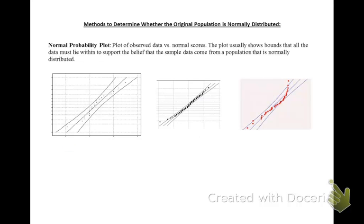The best method you could use to determine whether the original population is normally distributed is to form what's called a normal probability plot. This is our preferred method. The normal probability plot is a plot of observed data versus normal scores. The plot usually will show bounds that all the data must lie within to support the belief that the sample data come from a population that is originally normally distributed.